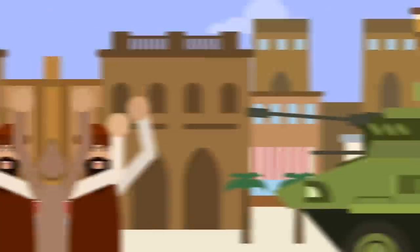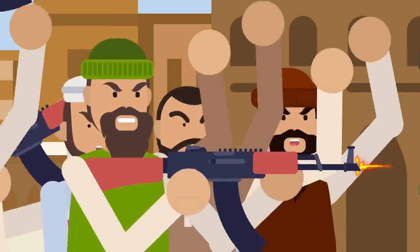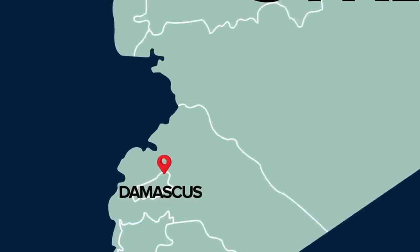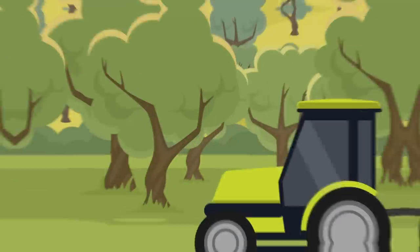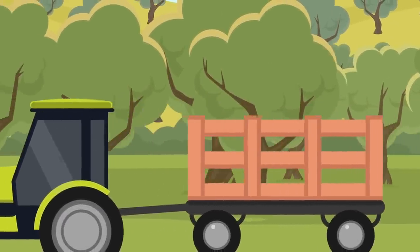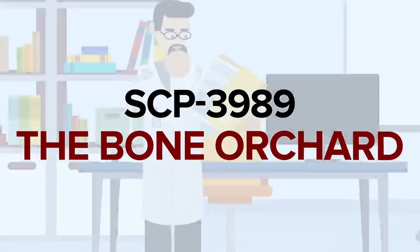Little did they know, amidst all this pain and bloodshed, something even more dangerous was brewing. An anomalous phenomenon in the sunny plains north of Damascus that may pose a threat to all of humanity someday, a threat known to the SCP Foundation as SCP-3989, the Bone Orchard.